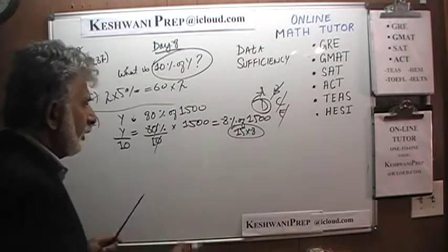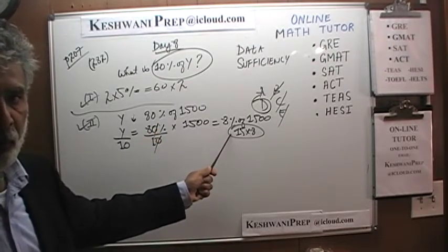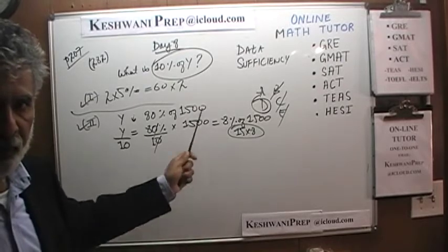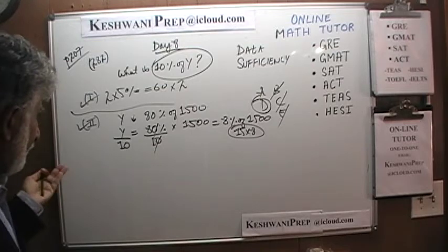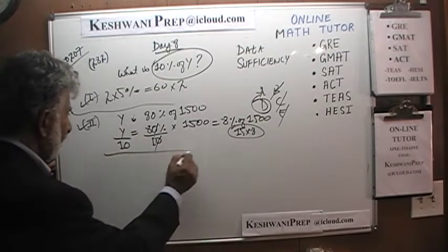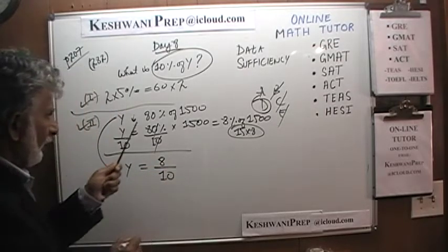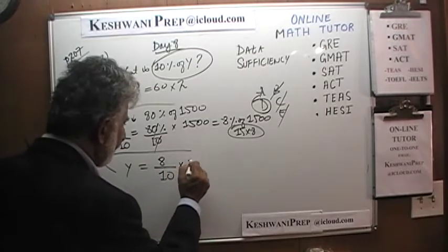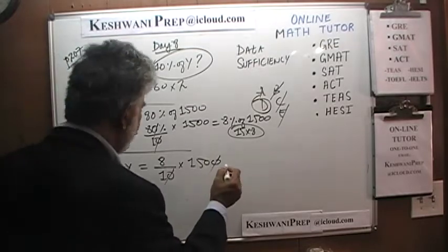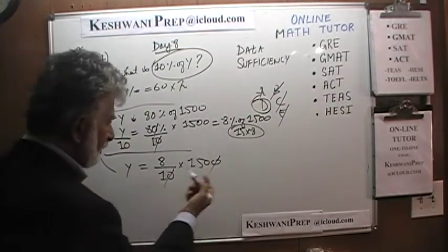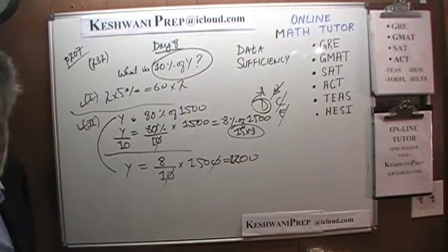If you ever do the work and find a conflicting answer — for example, the first statement tells you Y is 120 and the second statement tells you Y is 150 — then something has gone wrong. They should always agree. If you don't like this method, we could go the traditional way: Y is 80% of 1500, written as 8/10 times 1500. Dividing top and bottom by 10 gives Y equals 1200, and therefore 10% is 120.